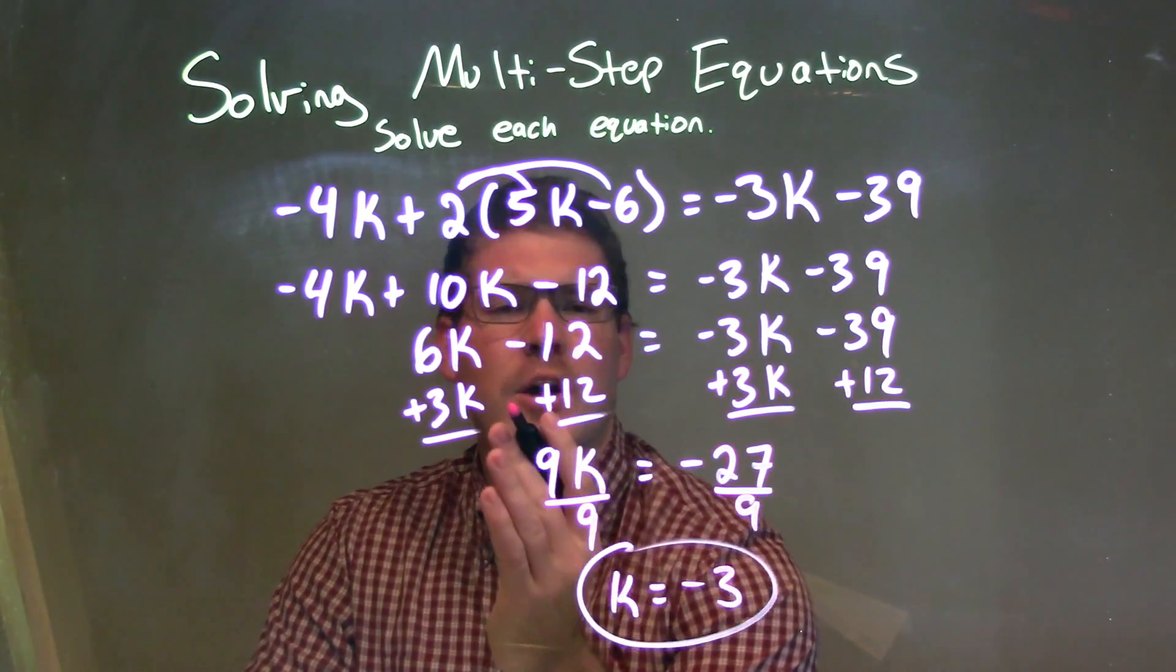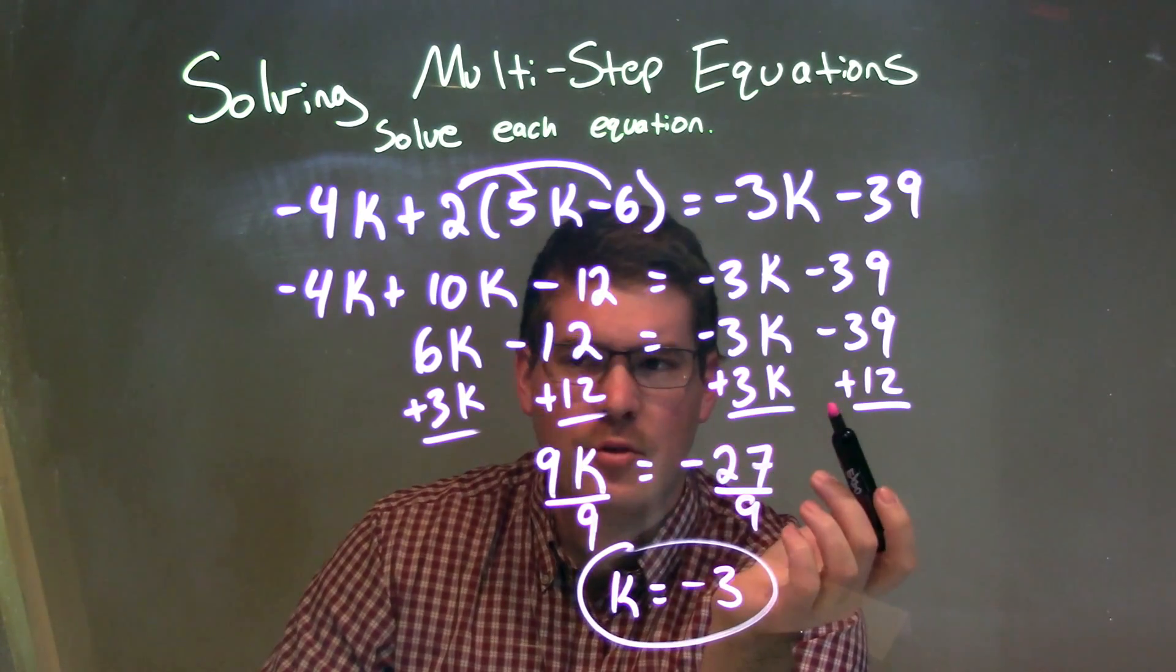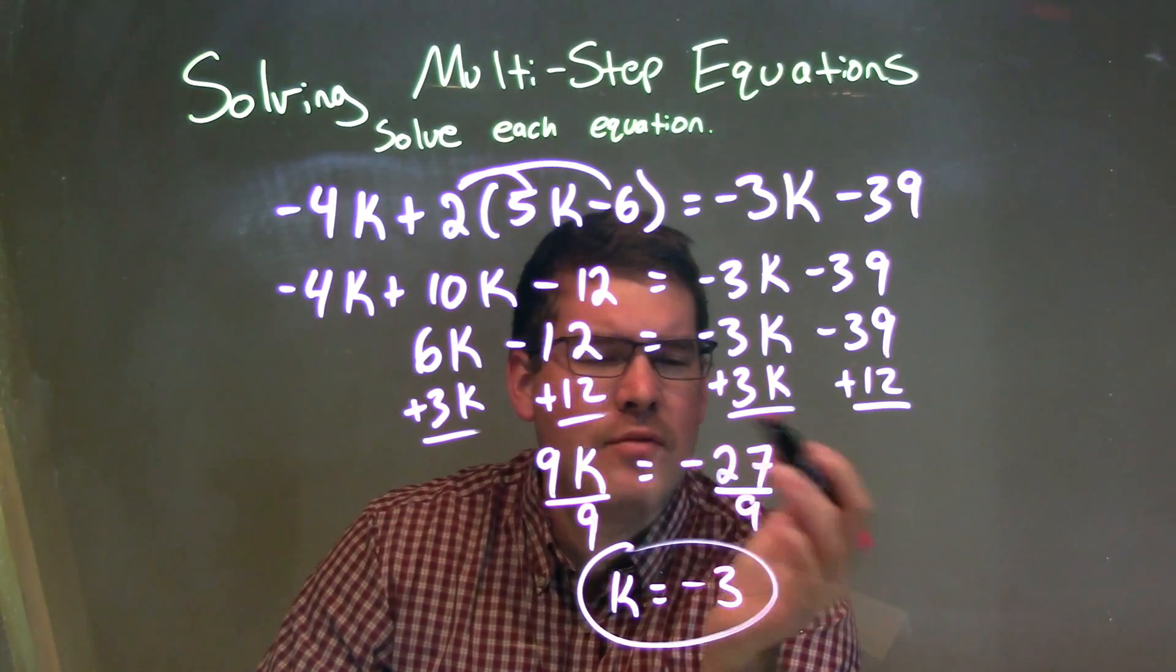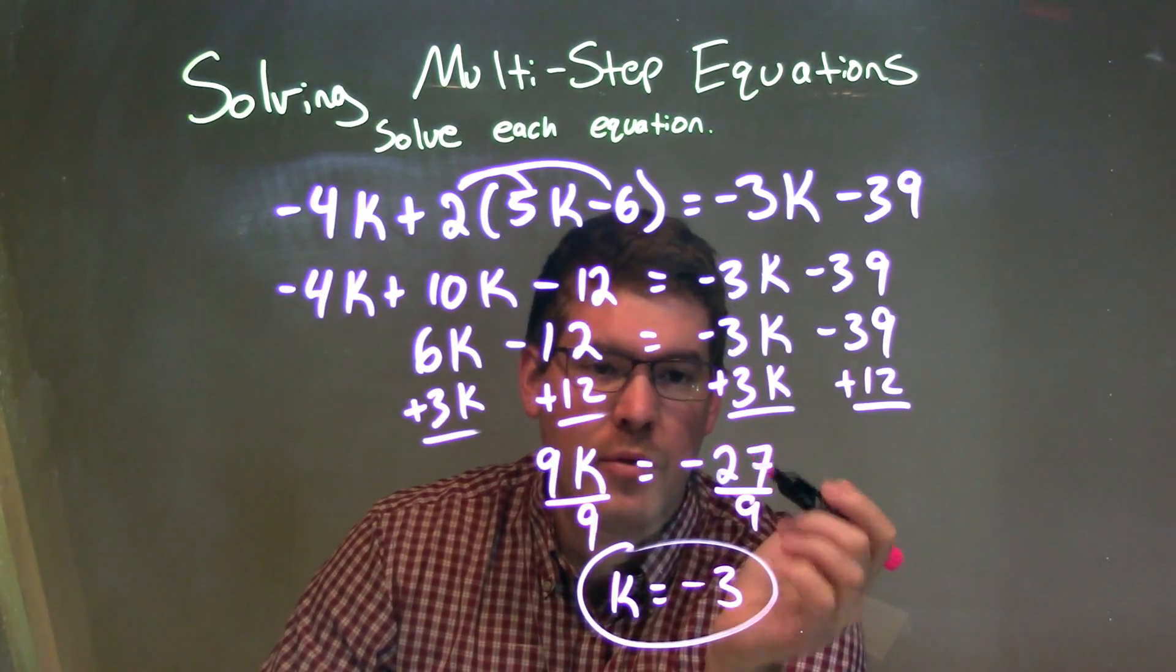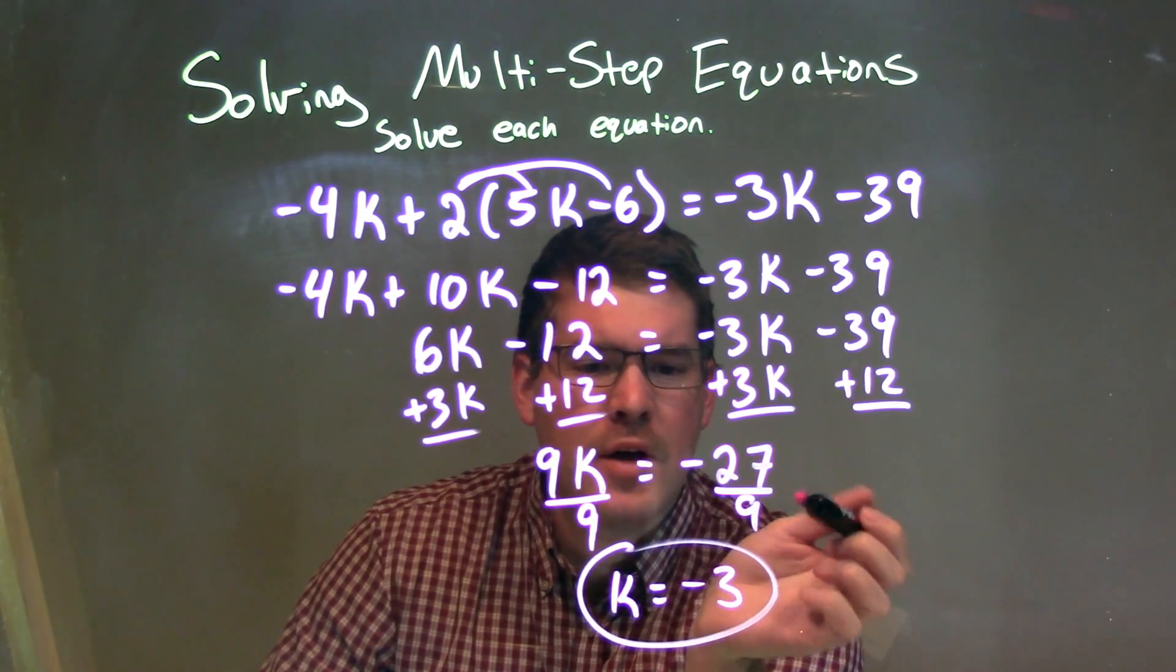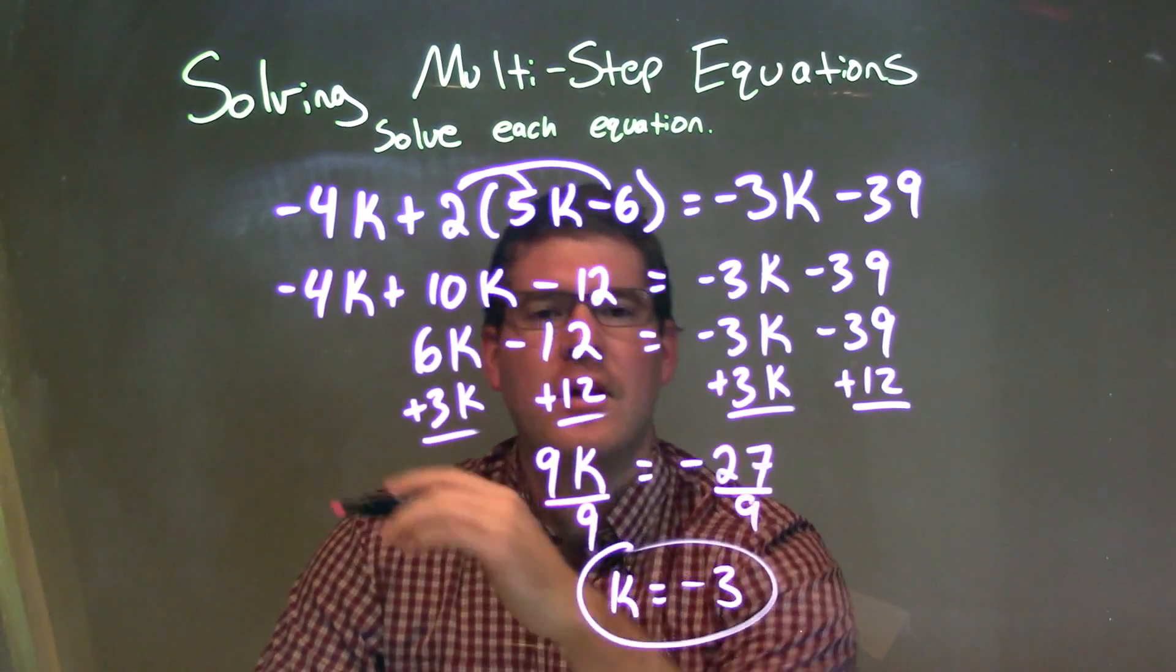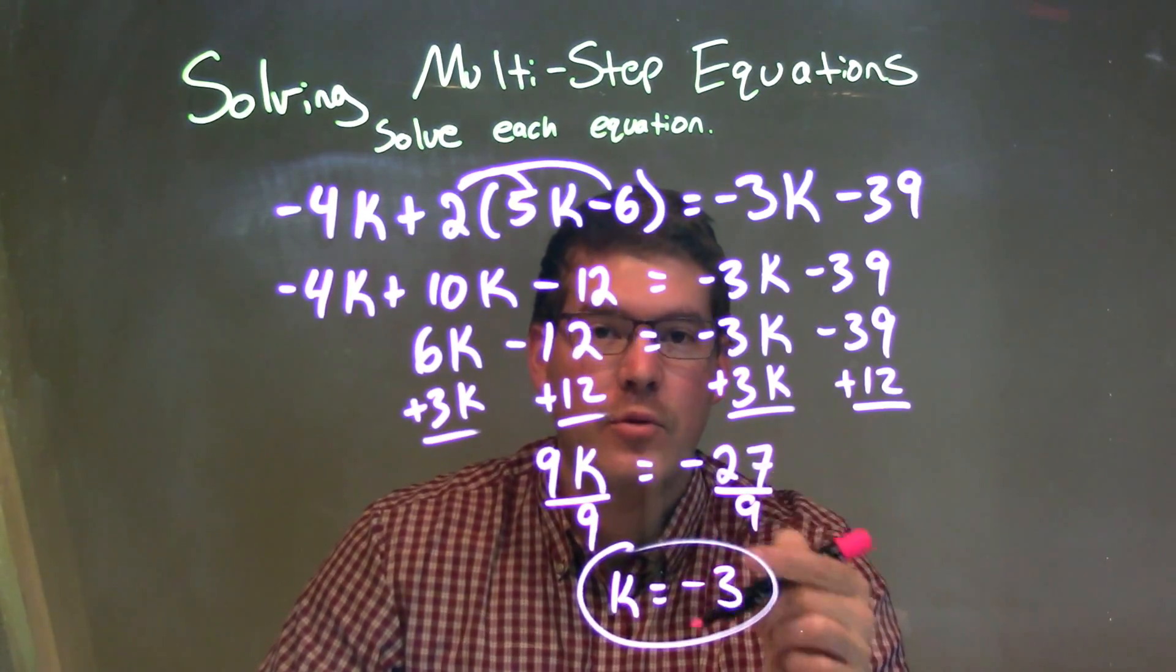I then brought all my variables to the left and my numbers to the right. That left me with 9k on the left and negative 27 on the right. I then divided by 9 on both sides giving me k isolated by itself equal to our final answer which is negative 3.